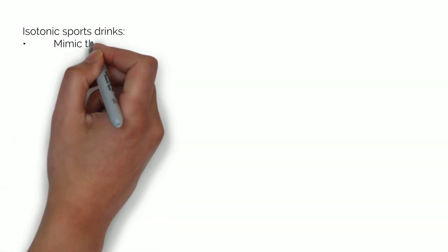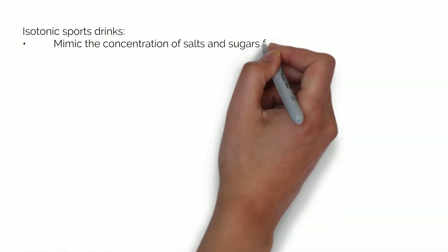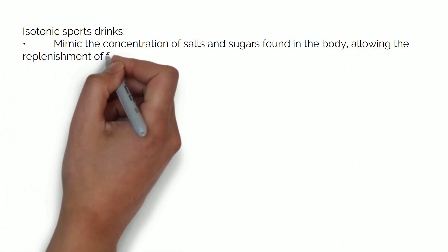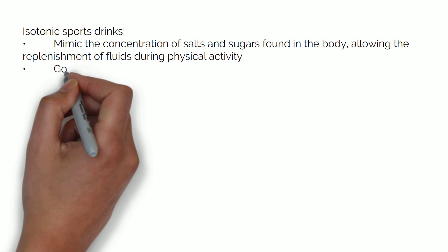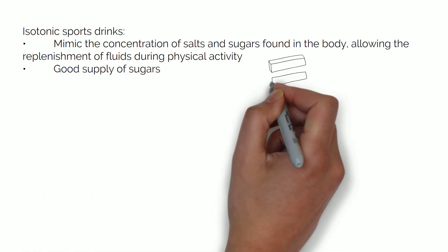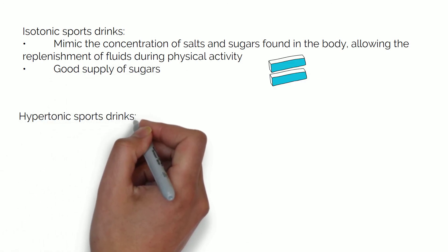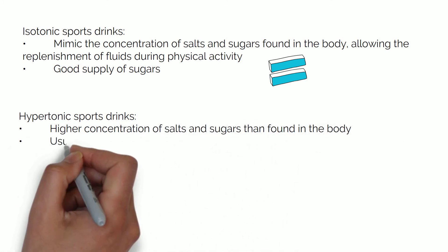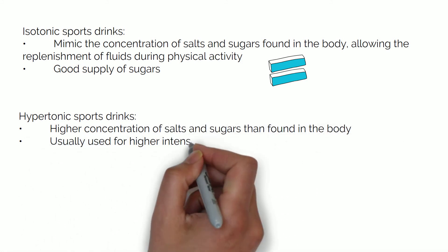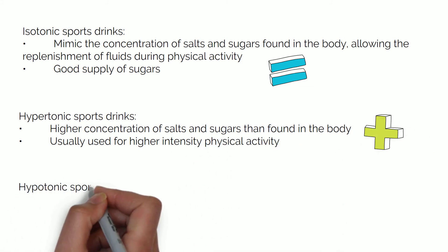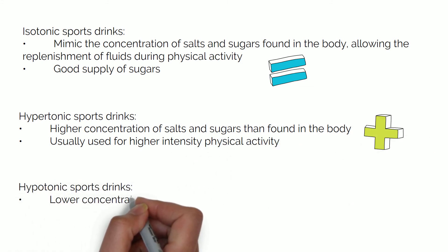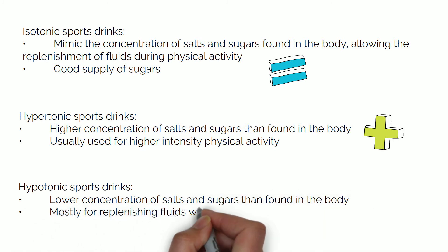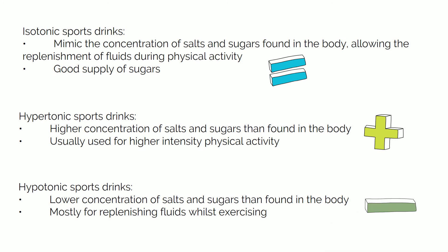There are three types of sports drinks. Isotonic sports drinks, which mimic the concentration of salts and sugars found in the body, allowing the replenishment of fluids during physical activity — this is a good supply of sugars. Hypertonic sports drinks, which have a higher concentration of salts and sugars than found in the body, and are usually used for higher intensity physical activity. And hypotonic sports drinks, which have a lower concentration of salts and sugars than found in the body, and are mostly used for replenishing fluids whilst exercising.